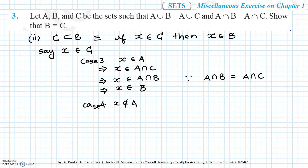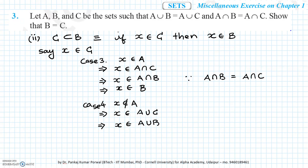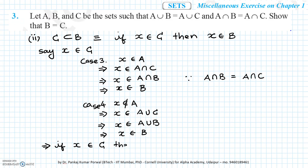In Case 4, X does not belong to A but X belongs to C, so we can conclude X belongs to A union C, since the element only needs to be in any one of the sets. From this, we conclude X belongs to A union B. Since X is not in A, it must be in B. So in both Case 3 and Case 4, if X belongs to C, then X belongs to B, which is equivalent to saying C is a subset of B.